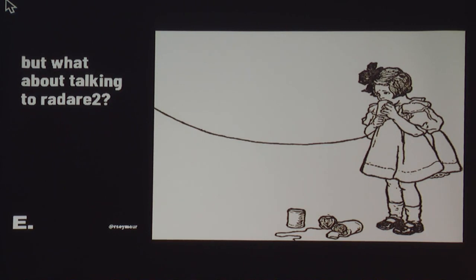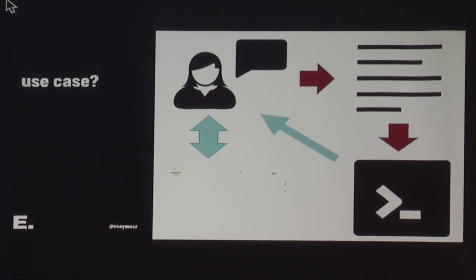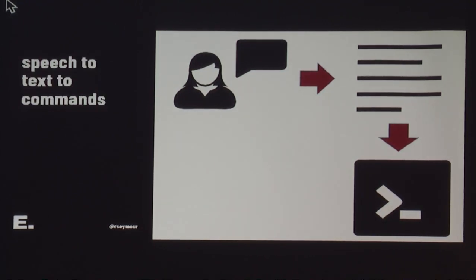The idea would be that a user could be using their neat GUI — whether it's Cutter or whatever — down in the lower left, while they're also saying stuff at random to their machine, and their machine is offering them little bits of information. I view this as sort of where the future is heading, whether we actually want it to or not — we'll probably be sitting in open offices with everyone wearing bone conduction microphones and whispering to themselves constantly in a frenetic nightmare.